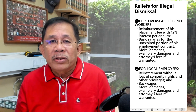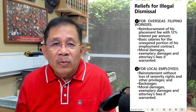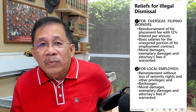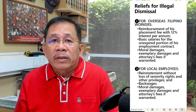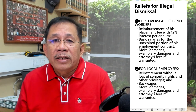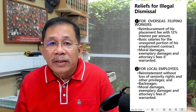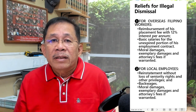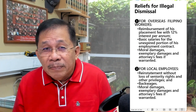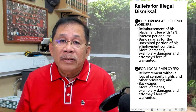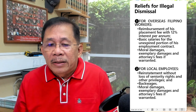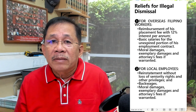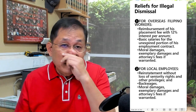As regards the reliefs for illegal dismissal, determine who the employee is — is he an overseas Filipino worker or a locally employed worker? For overseas Filipino workers, the relief is reimbursement of placement fee with 12% interest per annum, plus basic salaries for the unexpired portion of the employment contract. In some cases, moral damages and exemplary damages may be awarded if warranted.